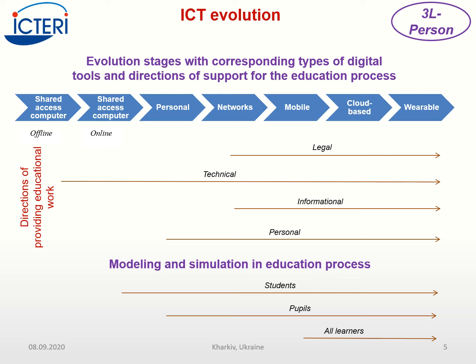The model of transformation of digital education can be presented as evolution stages with corresponding types of digital tools and directions of support for the education process. If the first stage can be described as one shared access computer for many users working offline, the next one had a new feature: the possibility for a user to work online. The next stage dealt with personal computers that became smaller and more mobile.